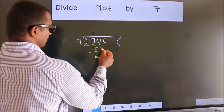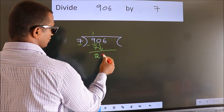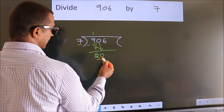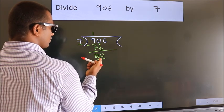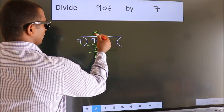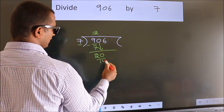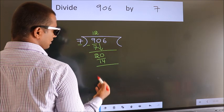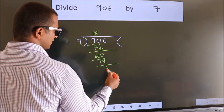After this, bring down the beside number. So 0 down. So 20. A number close to 20 in 7 table is 7 times 2 equals 14. Now we subtract. We get 6.